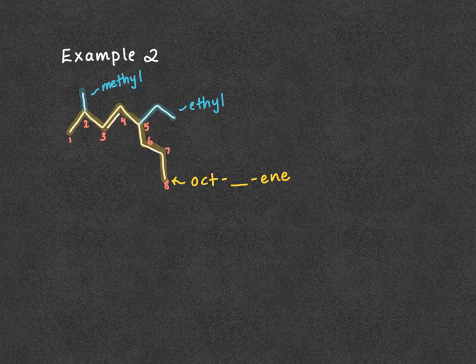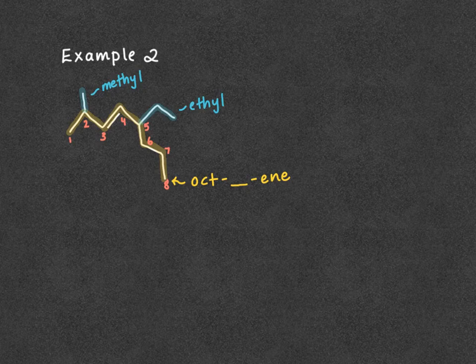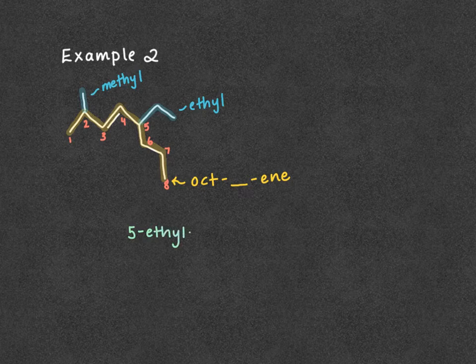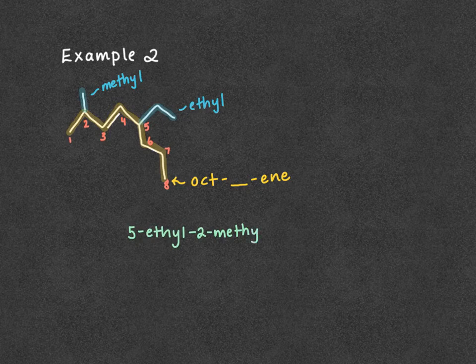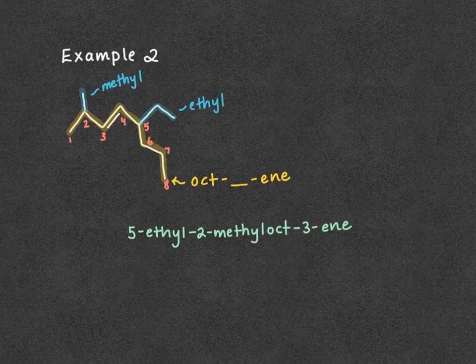Now that my compound is numbered, I can put it all together. I list my substituents alphabetically: ethyl comes before methyl, so it'll be 5-ethyl, then 2-methyl. Then oct-, and my double bond is between carbons 3 and 4 — I take the smaller of those two numbers — giving oct-3-ene. The full name is 5-ethyl-2-methyl-oct-3-ene.